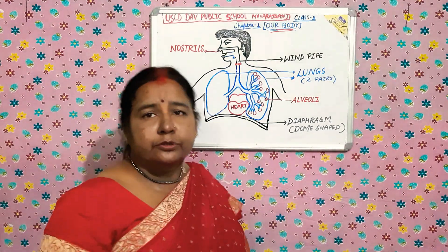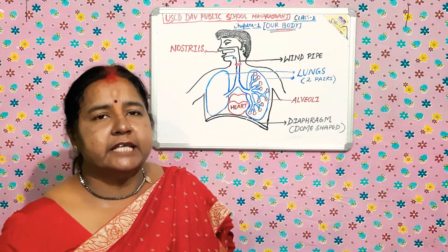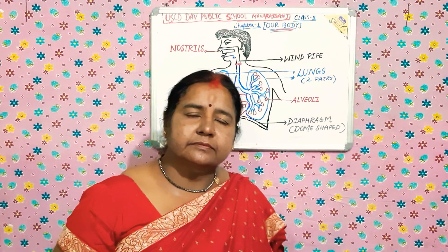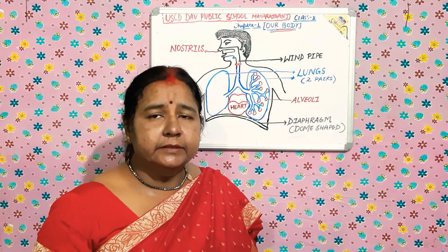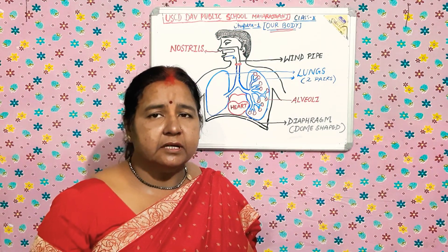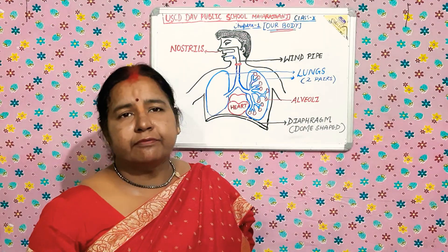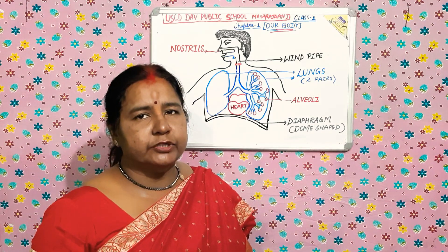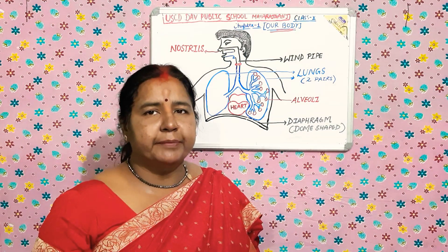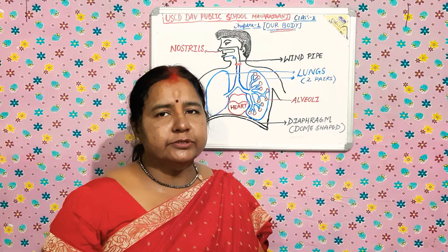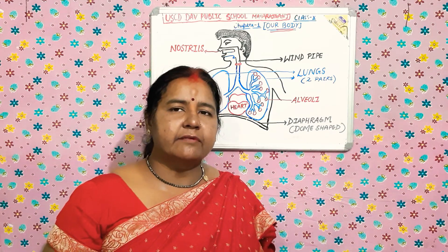Now write down the questions. First question: What is an organ? Second question: What is a system? Third question: What is breathing? Fourth question: What is the breathing system? Fifth question: What is the function of oxygen taken during breathing? Last question: What is the function of the diaphragm?